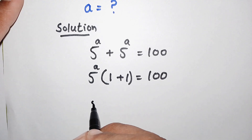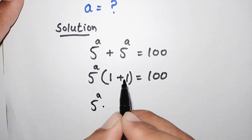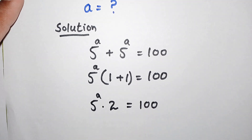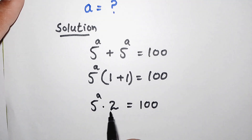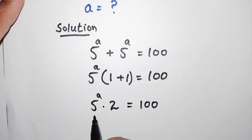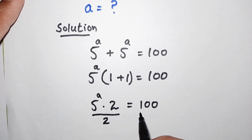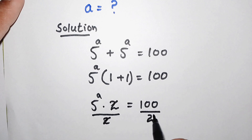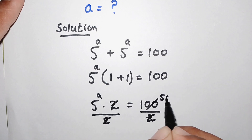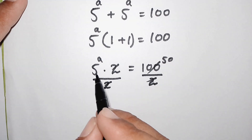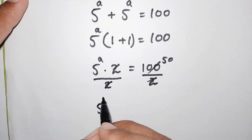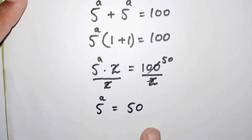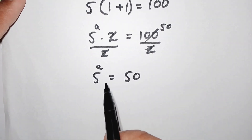In the next step, 5 to the power of a times (1 plus 1) equals 2, which is equal to 100. To solve this, we divide both sides by 2. These twos cancel and we get 5 to the power of a is equal to 50.